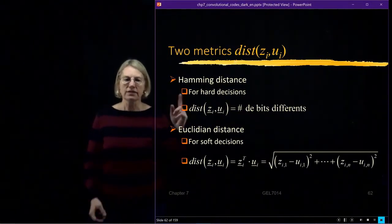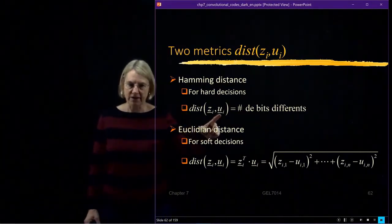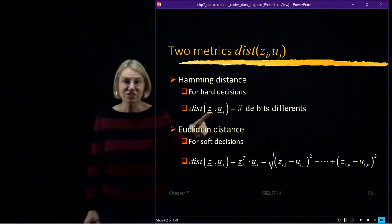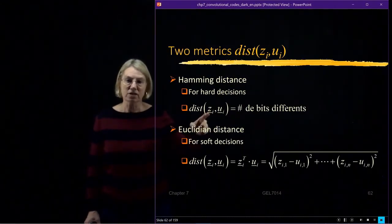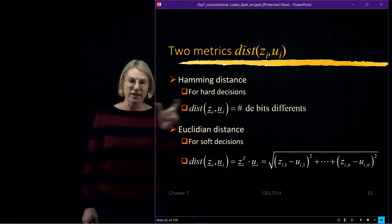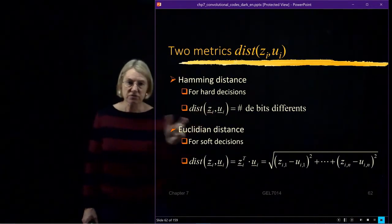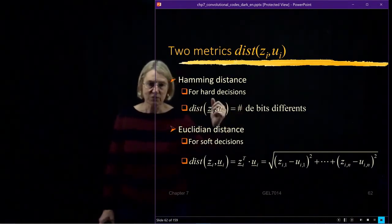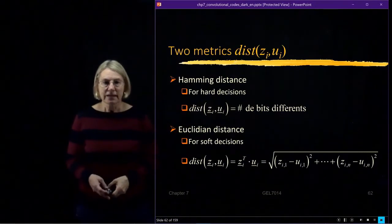Hamming distance, what does that mean? Well, in the hamming distance, the codeword is binary. And I got hard decisions, so this is binary also. And so if I'm looking at a sequence, the distance between the two sequences is just the number of bits which are different.